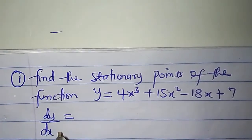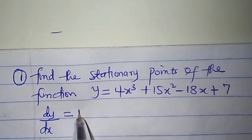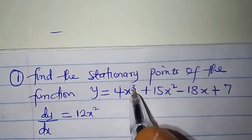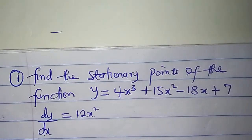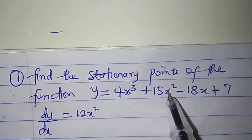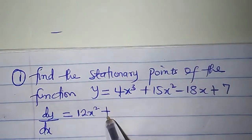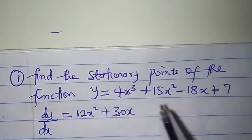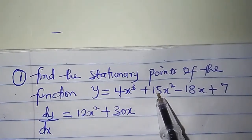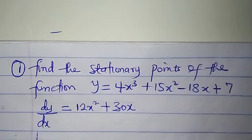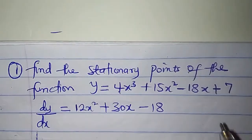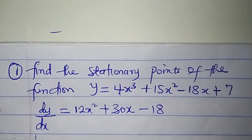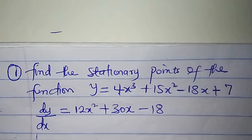Differentiate 4x³ and we'll get 12x² — 3 times 4 is 12, 3 minus 1 is 2. Differentiate 15x² and we'll get 30x — 2 times 15 is 30, 2 minus 1 is 1. Differentiate -18x and we'll get -18. Differentiate 7 and we'll get 0. So this is the gradient function of the curve.